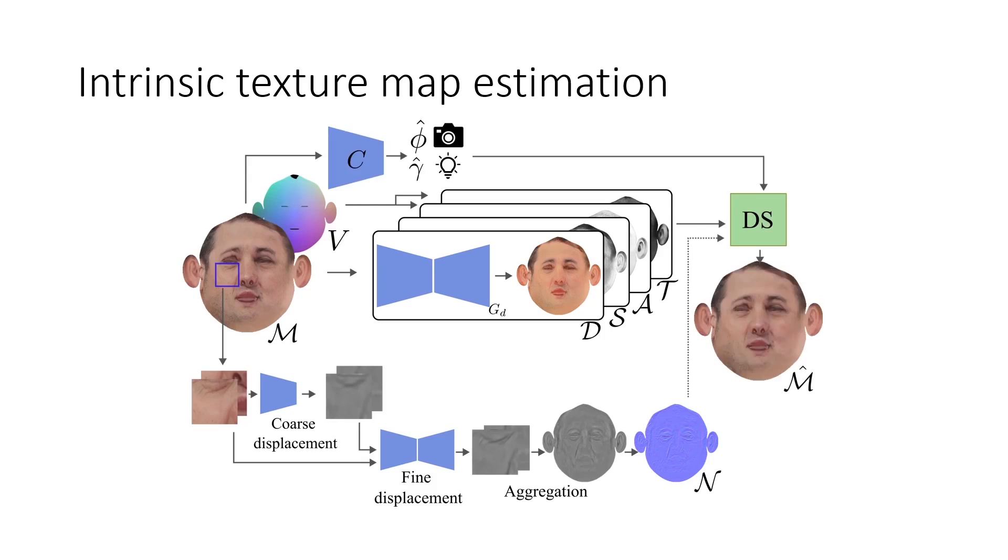We then combine all maps using a novel differentiable shading. This enables self-supervised learning from in-the-wild images, making the model robust to arbitrary light conditions.